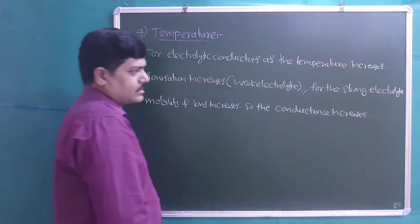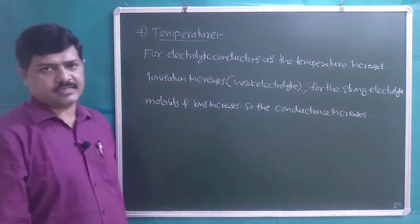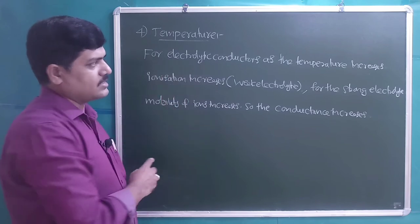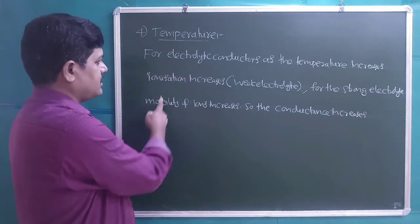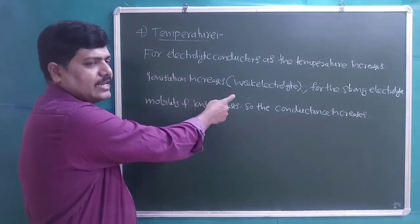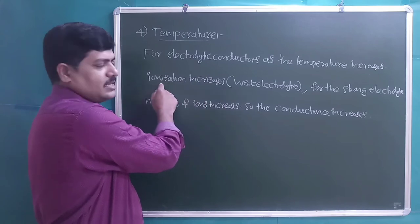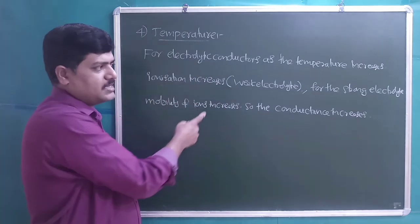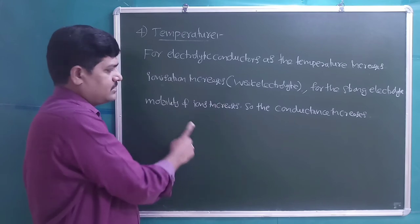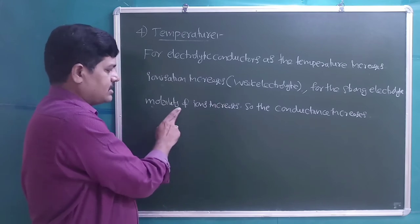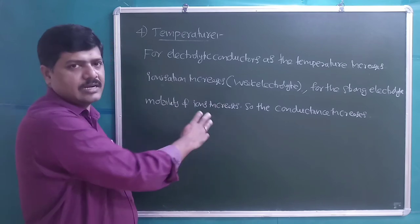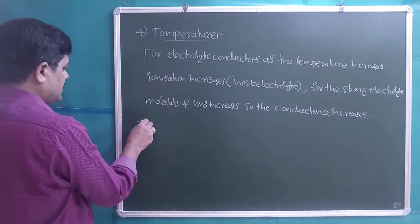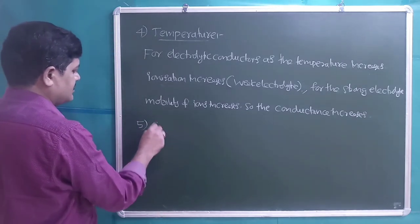As temperature increases for electrolytic conductors: for weak electrolytes, ionization increases; for strong electrolytes, ionization remains the same at all temperatures but mobility of ions increases. As mobility increases, conductance increases.